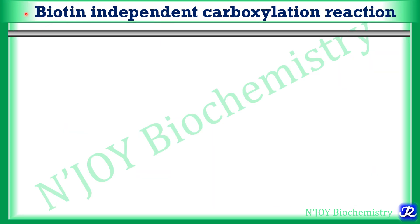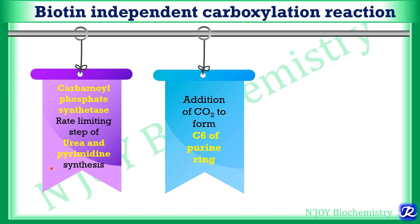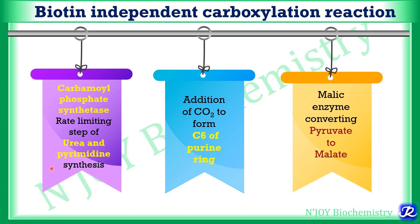There are some carboxylation reactions in the body which are biotin independent. First, the conversion of ammonia and carbon dioxide to carbamoyl phosphate — the first step of the urea cycle and pyrimidine synthesis — catalyzed by carbamoyl phosphate synthetase, which does not require biotin. Second, the addition of carbon dioxide to form C6 of the purine ring does not require biotin. Third, the malic enzyme which converts pyruvate to malate is also a carboxylation reaction that does not require biotin.